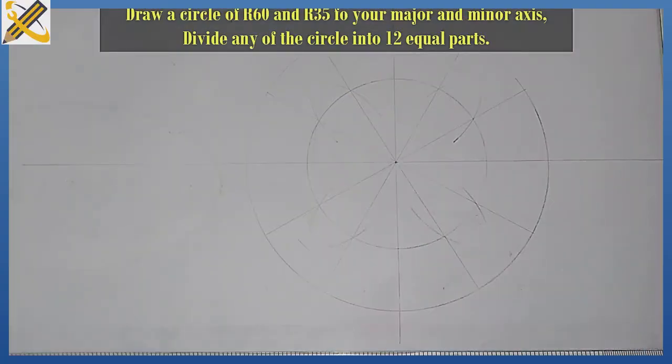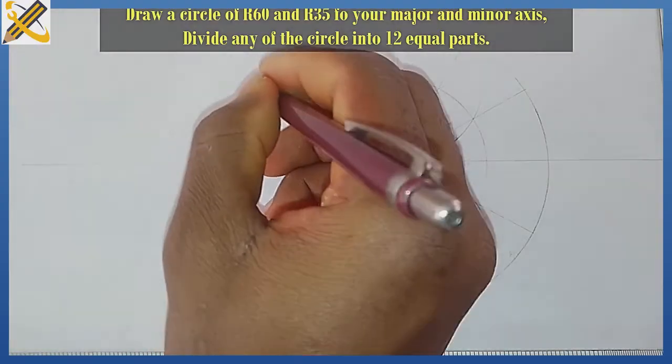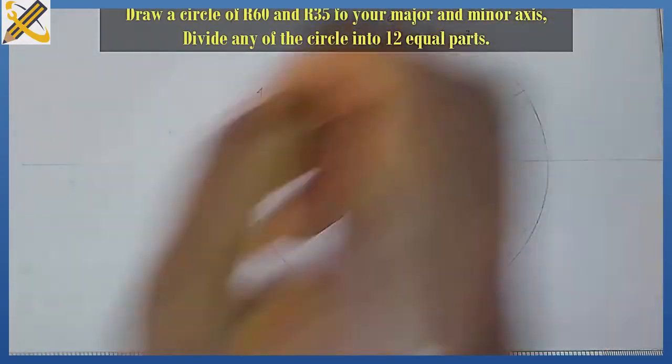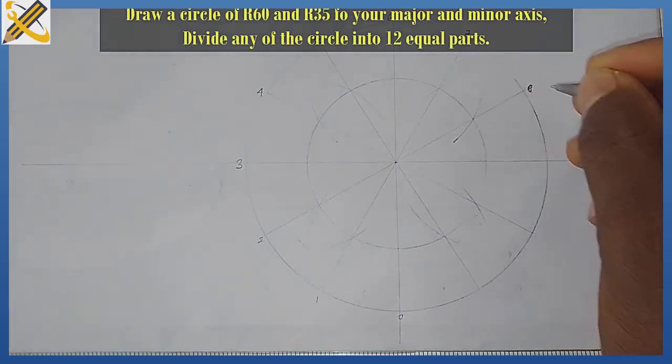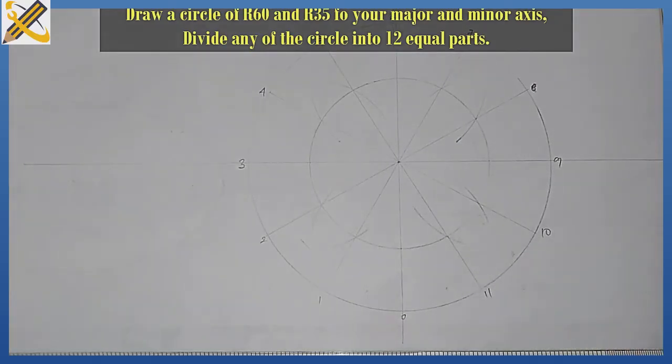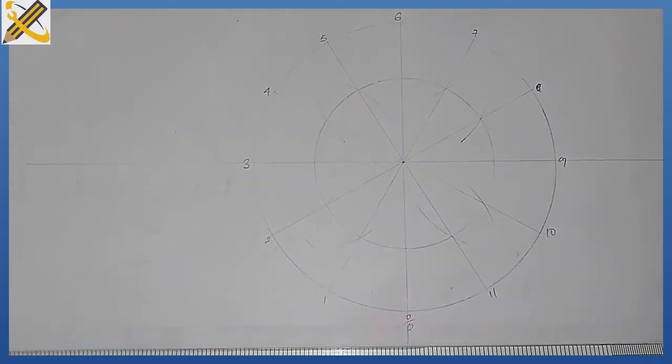I'm going to divide the circle into 12 equal halves then do my numbering. Let me start from the base: zero, one, two, three, four, five, six, seven, eight, nine, ten, eleven, and this is going to be zero over 12.